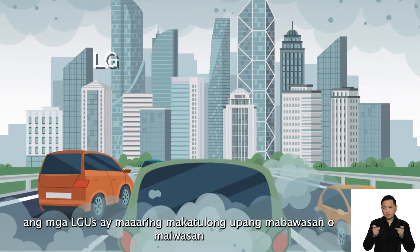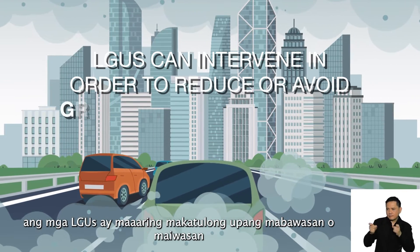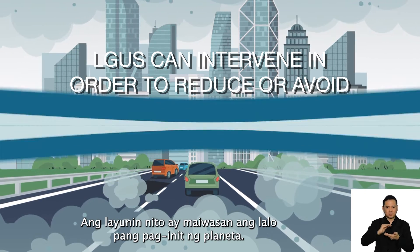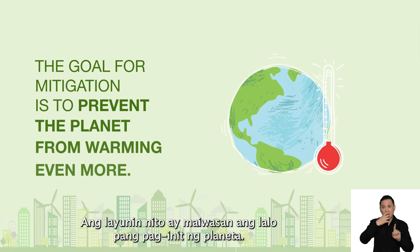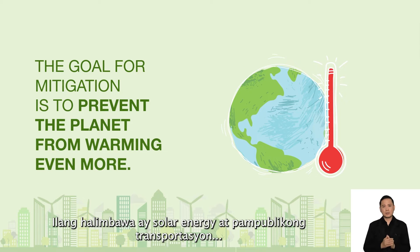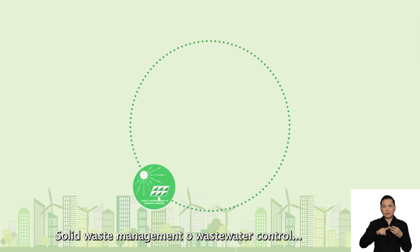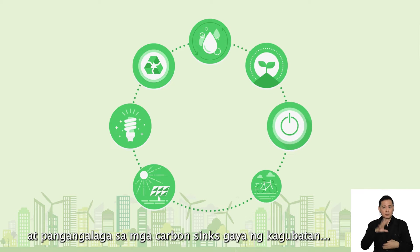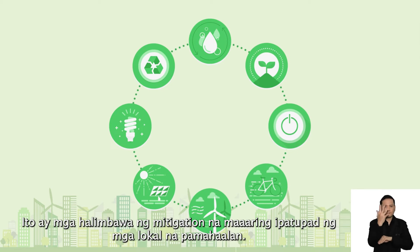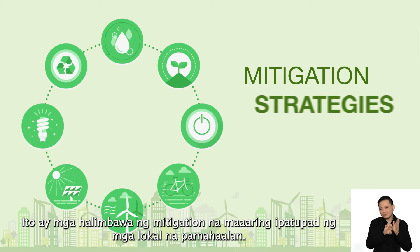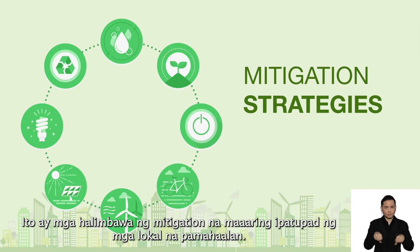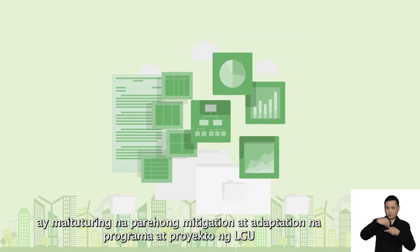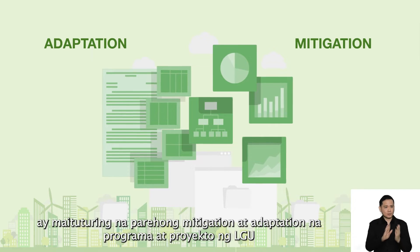For mitigation, LGUs can intervene in order to reduce or avoid greenhouse gas emissions. The goal for mitigation is to prevent the planet from warming even more. Think about solar and mass public transport, solid waste management or wastewater control, and increasing carbon sinks such as forests. These are mitigation strategies that local government units may prioritize. The local greenhouse gas inventory is considered for both adaptation and mitigation strategies.